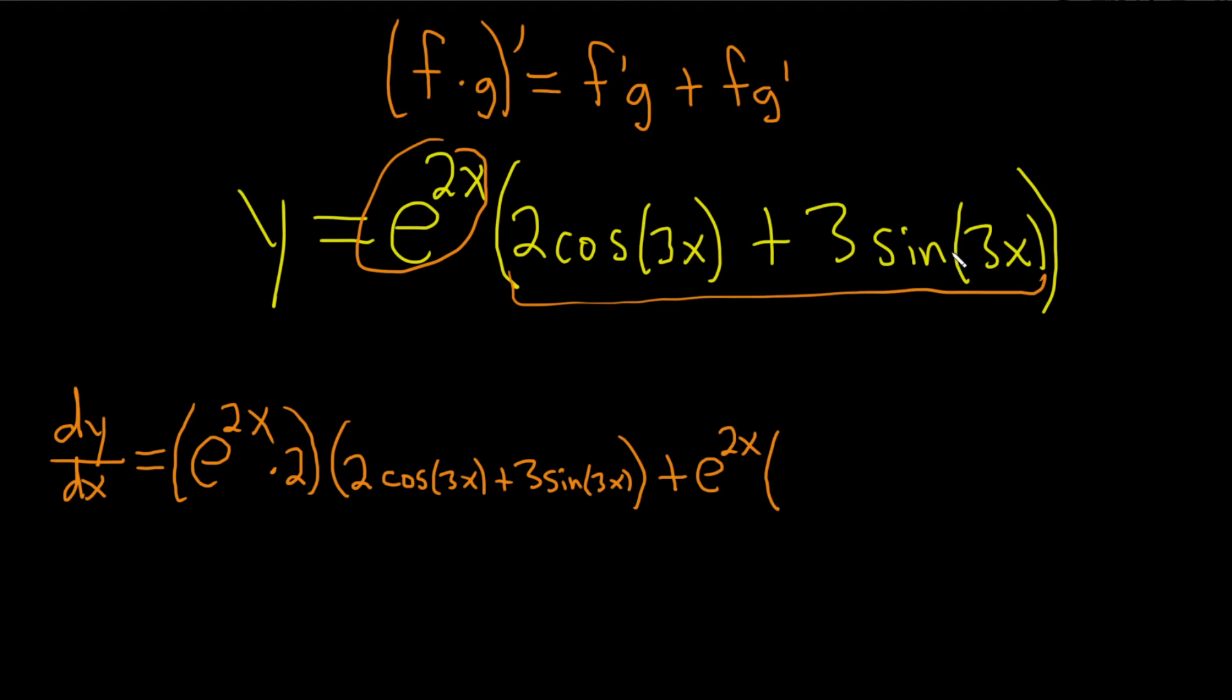So now we have to take the derivative of each of these pieces. So the number will hang out. The derivative of cosine is negative sine. This is 2 times negative sine of 3x. And then chain rule times the derivative of the inside. So the inside function is 3x and so its derivative is 3.